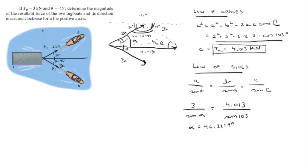And just by looking at it, you can tell that this angle right here, which is the angle that we're looking for, is this angle minus 30. So the final angle phi is equal to 46.23 minus 30, which equals 16.23 degrees.